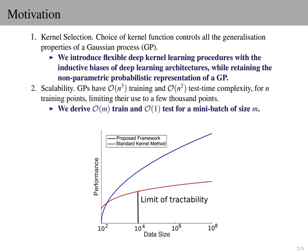Second, scalability: kernel methods typically only scale to about 10,000 points. Gaussian processes, in particular, have n-cubed training complexity and n-squared test time complexity for n training points. Our paper is intended to help address these open questions. We introduce flexible deep kernels that have the structural properties of deep learning architectures in combination with the nonparametric probabilistic representation of a Gaussian process.